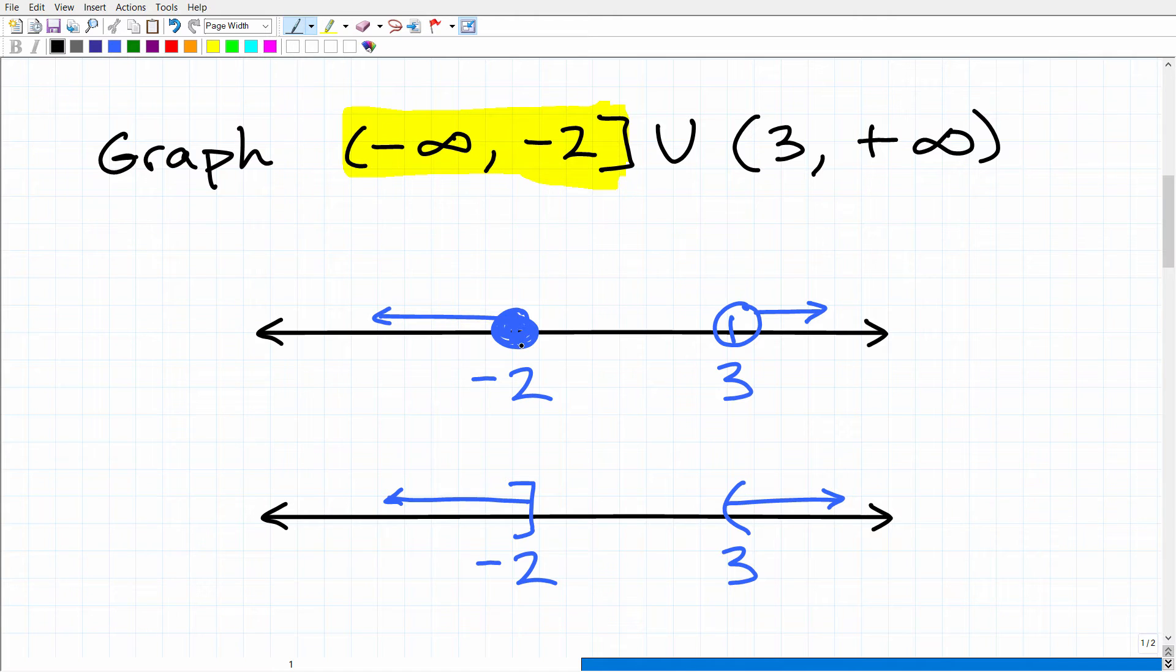So the way we would graph this would be a closed circle at negative 2 and an arrow going towards negative infinity. This is all numbers that are less than or equal to negative 2 going towards negative infinity. So this is this interval.